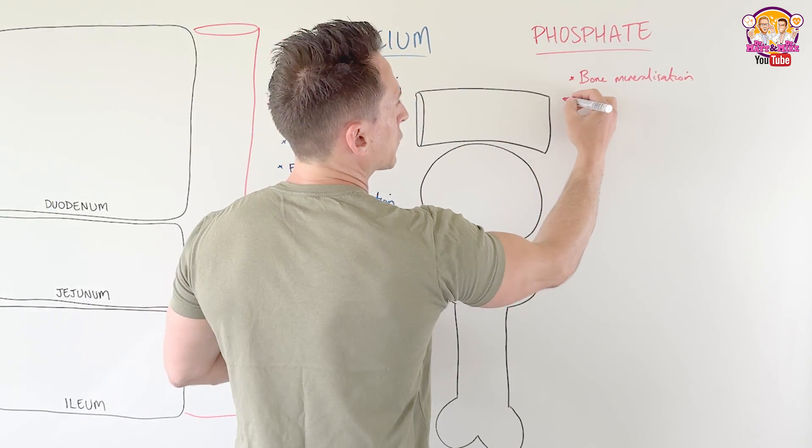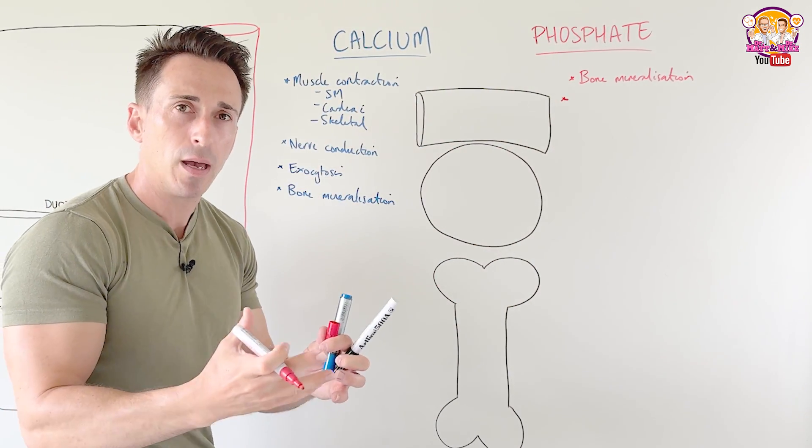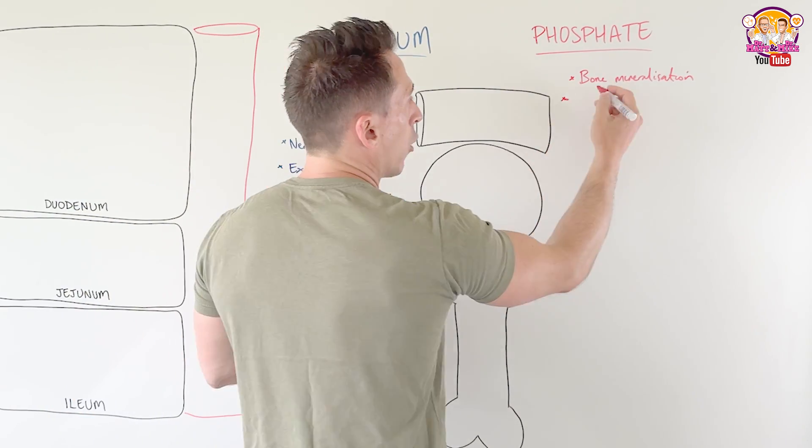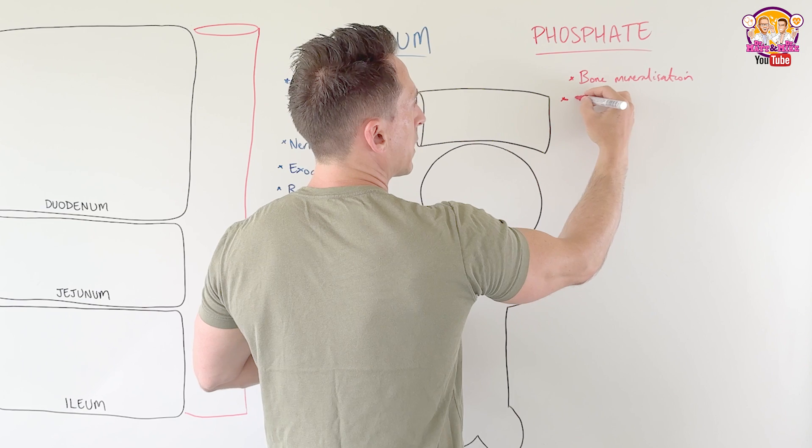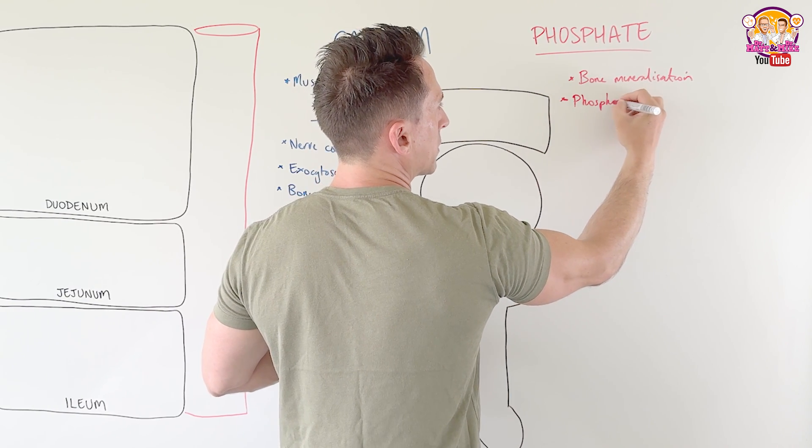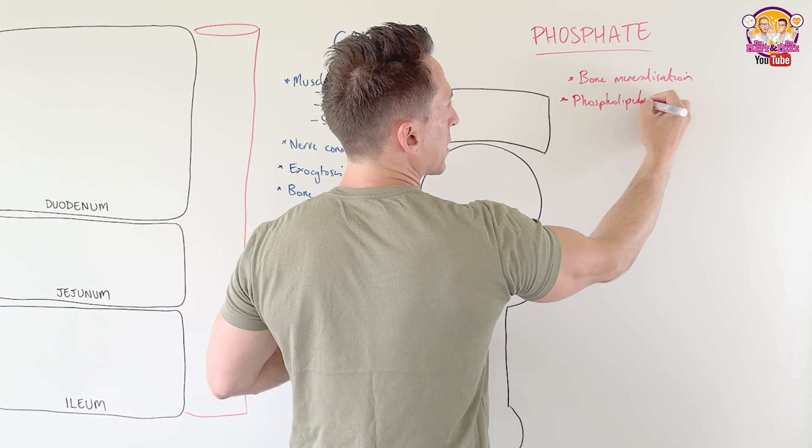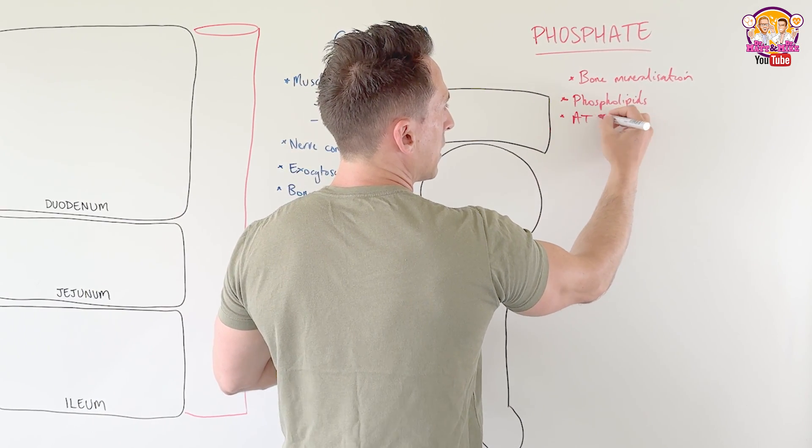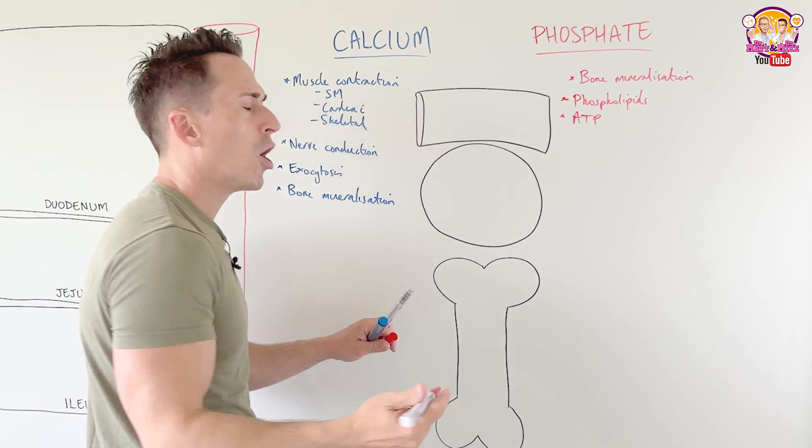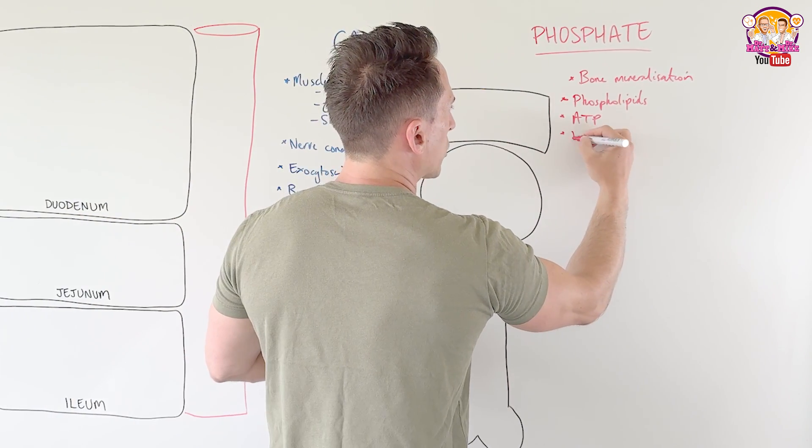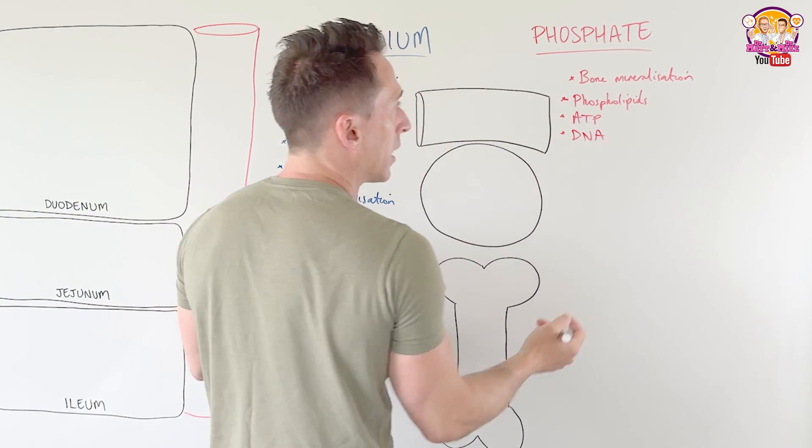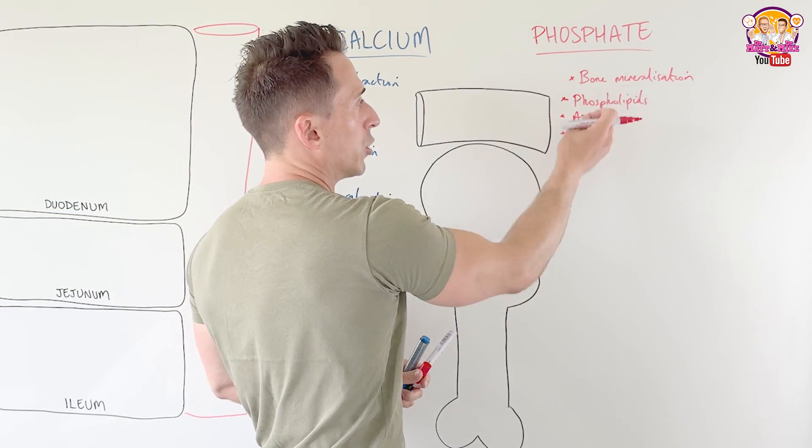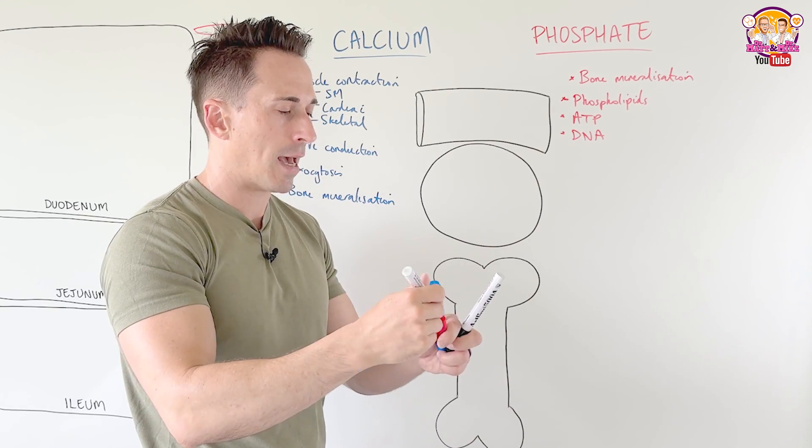What else does phosphate do? Well, phosphate's really important. It's part of, it's a component of many different structures of the body. So for example, phosphate is really important because it makes up phospholipids, and we know phospholipids are the membranes of our cells. It makes up ATP, adenosine triphosphate, the energy currency of the body. It makes up nucleic acids, which we know comprise DNA. So it's a really important structural molecule within phospholipids, ATP, and DNA.